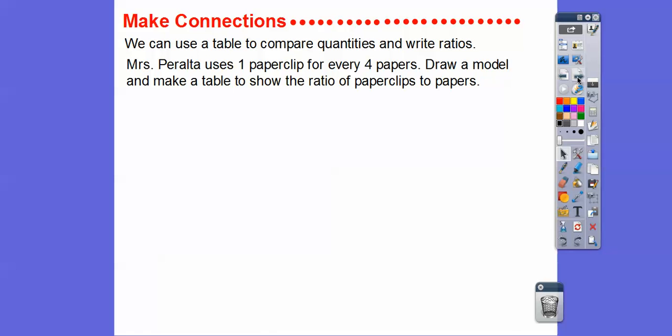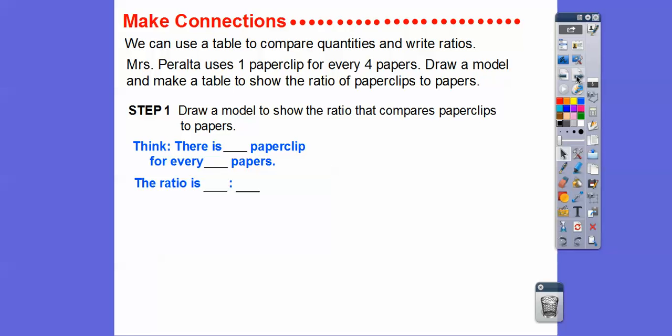Now the ratio is going to be one to four. We'll use a table to compare quantities and write a ratio. Mrs. Peralta, a great fourth grade teacher, uses one paperclip for every four papers. We'll draw and make a table to show the ratio of paperclips to papers. For one paperclip there are always four papers, so the ratio is one to four. Using circles for paperclips and squares for papers: one circle for four squares — one paperclip for every four papers.